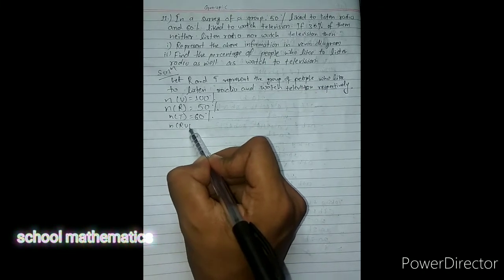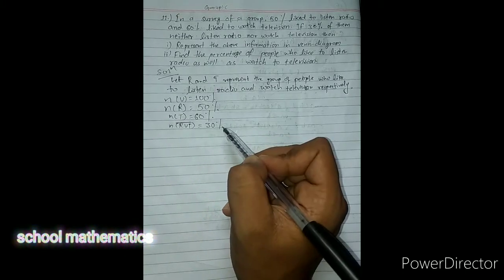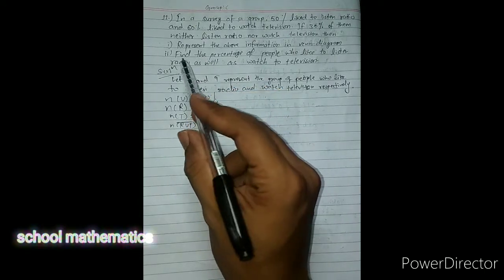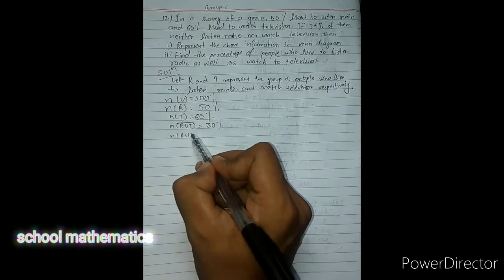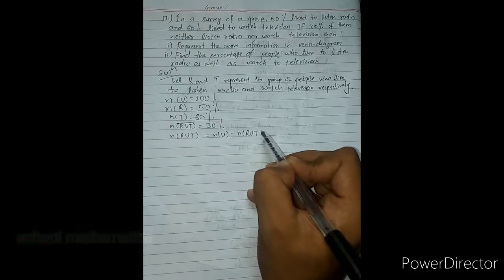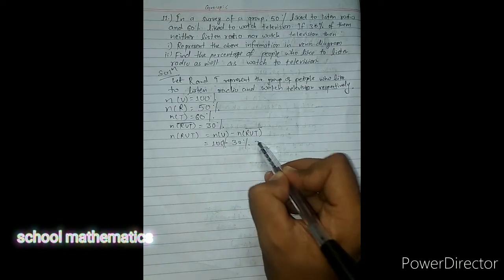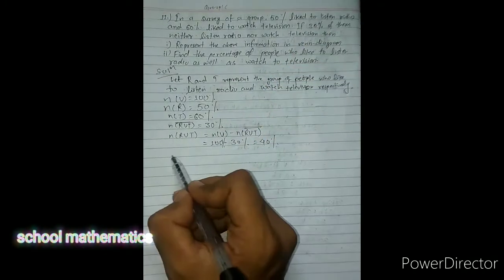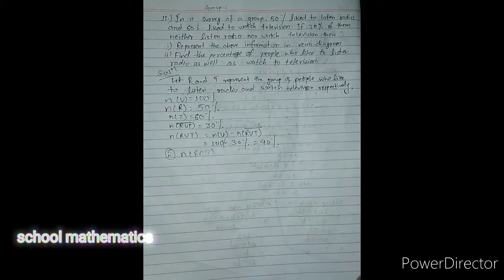Number of R is 50% — those who like to listen to the radio. 60% like to watch television. 30% of them neither listen to the radio nor watch television; 'neither' means complement. So the complement is 30%. Now let's find the percentage of people who like both. Number of R union T: we use 100 minus the complement, which is 100 minus 30, giving 70%.